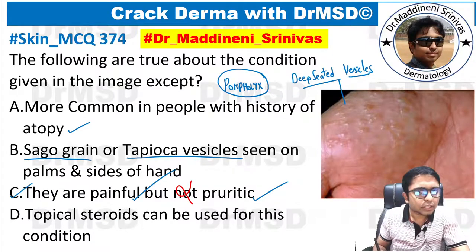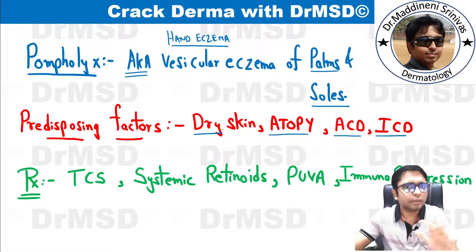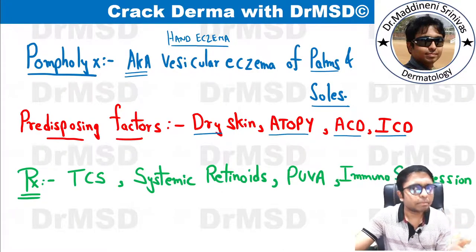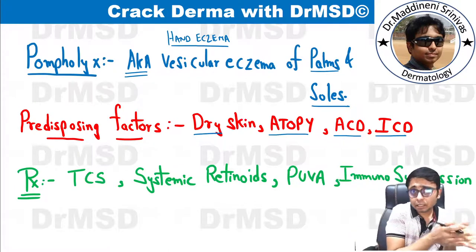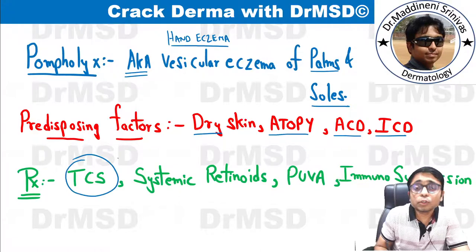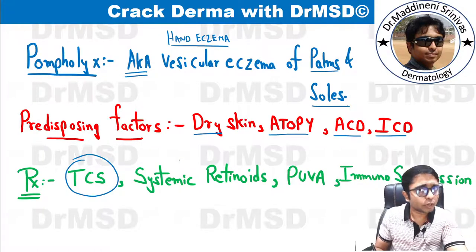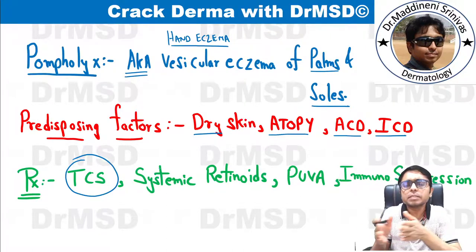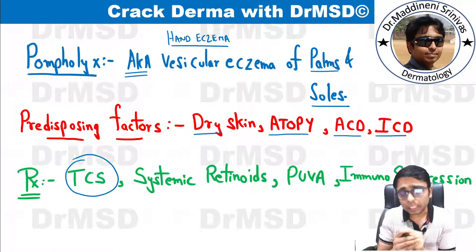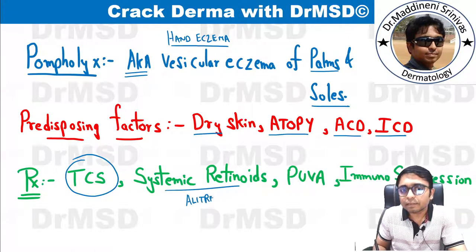The last option says topical steroids can be used for this condition, which is also correct. Treatment is very straightforward to start: advise the patient to avoid certain irritants and allergens, and the skin may normalize. The next step is topical corticosteroids, which are the topical treatment of choice. For recalcitrant, difficult-to-treat pompholyx, we advise oral medications such as systemic retinoids — for example, alitretinoin is the preferred retinoid.